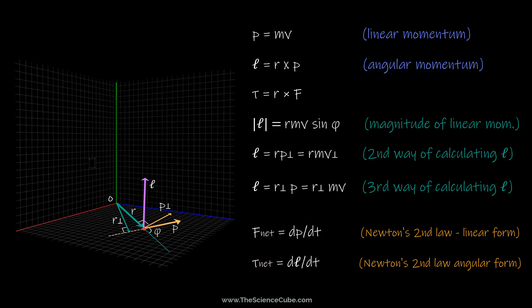Remember that this equation is valid only if the torque and the angular momentum are defined with respect to the same point, which quite often is the origin in the coordinate system being used. If you found this lesson helpful, please give it a thumbs up, and for a deeper understanding of rotation, angular variables, and rolling motion, check out the playlist linked in the description.